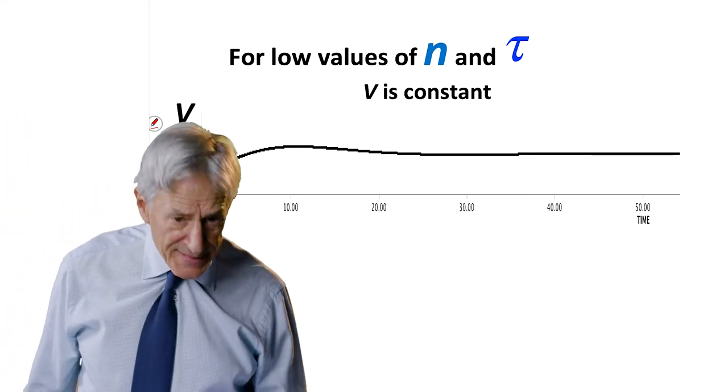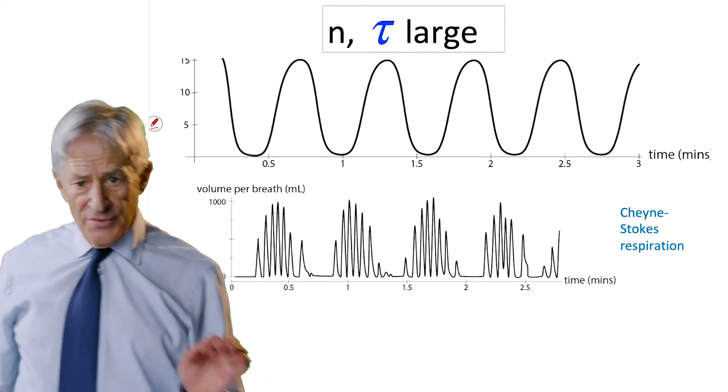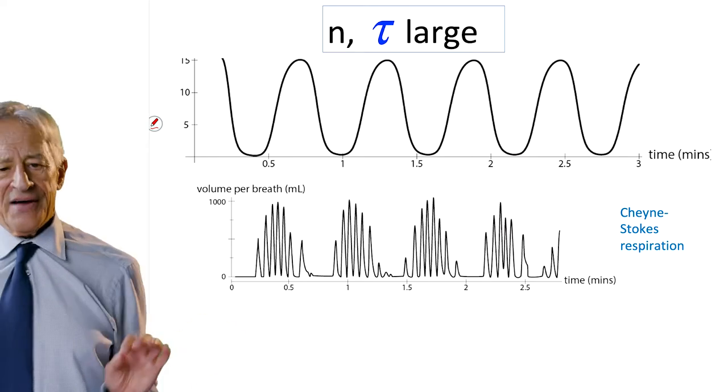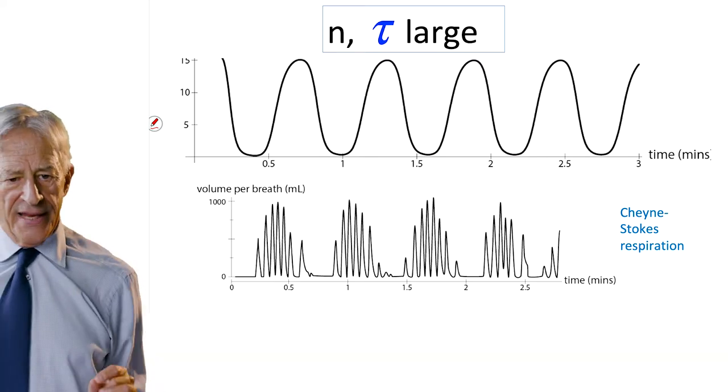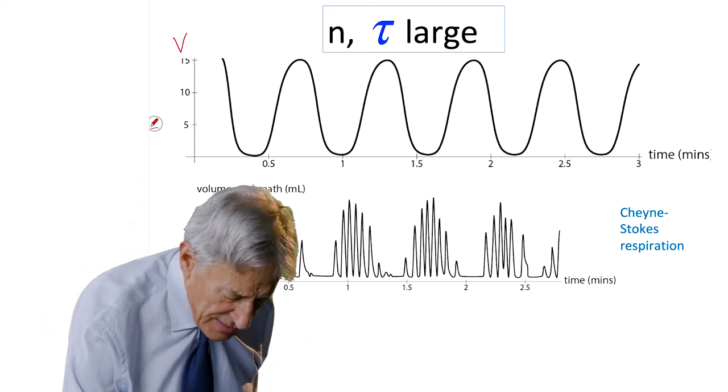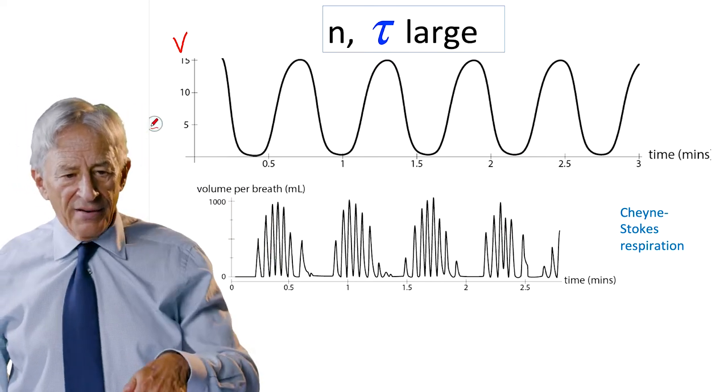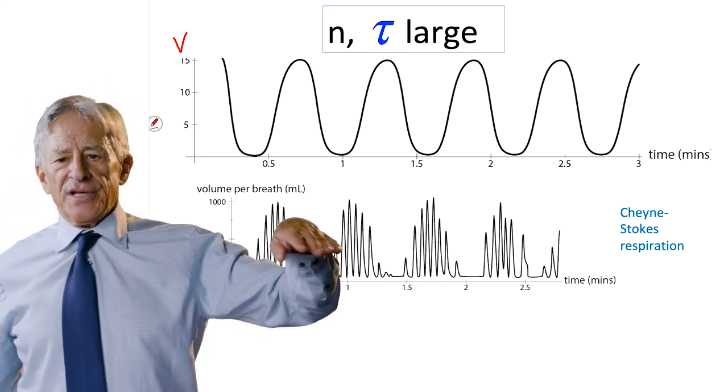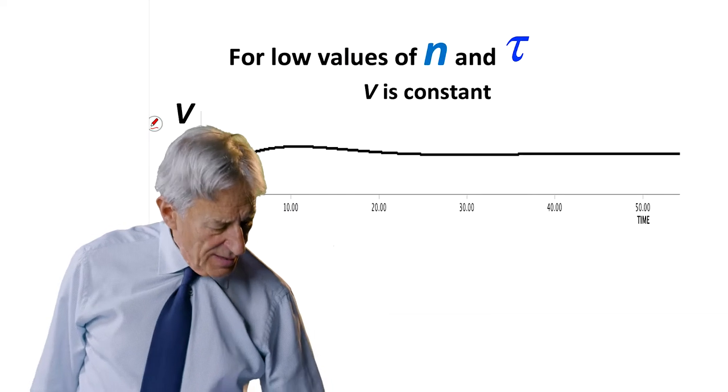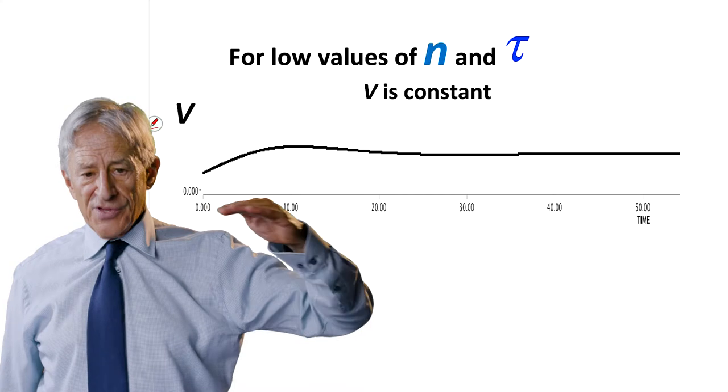But when N and tau get large, the upper tracing is the output of the model for larger N and tau. And remember that this V here is the ventilation rate. This is not breathe in, breathe out. This is the ventilation rate which in a normal person sitting quietly, the ventilation rate is constant. You're breathing at 20 breaths per second or whatever.